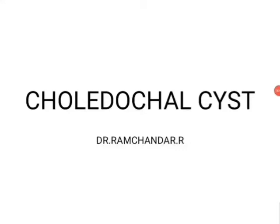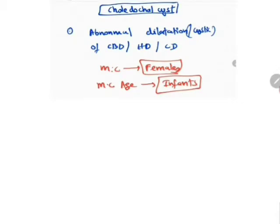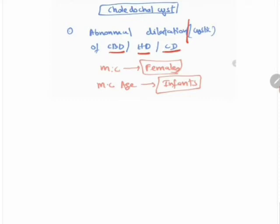Today we will discuss a topic on choledochal cyst. What is a choledochal cyst? It is defined as an abnormal or cystic dilatation of the common bile duct, hepatic duct, or cystic duct. The word choledochal cyst is nowadays termed as a biliary cyst, which is considered the more appropriate term.